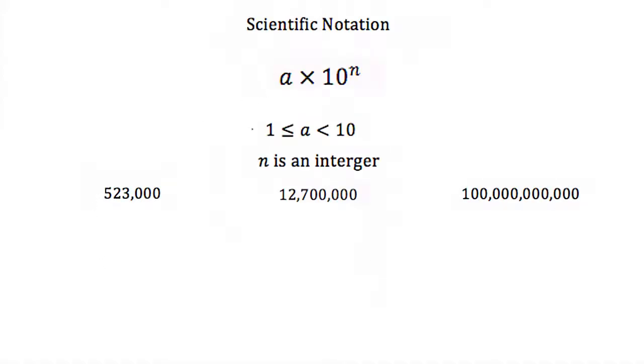So again, the way to write scientific notation is that it's some number times 10 to some power, and this number a has got to be between 1 and 10, and this n is an integer.